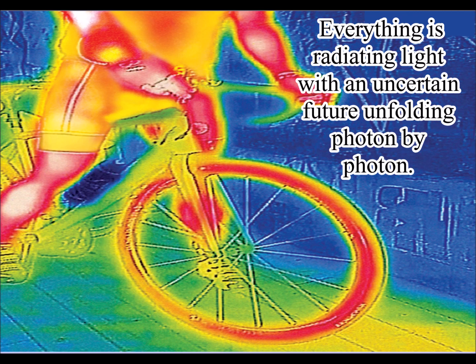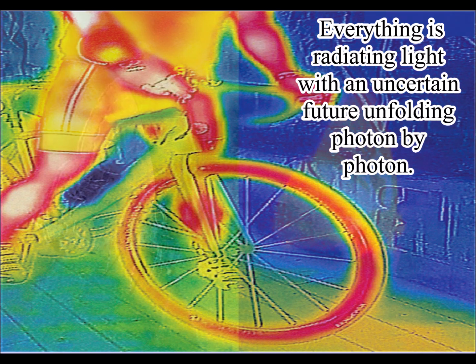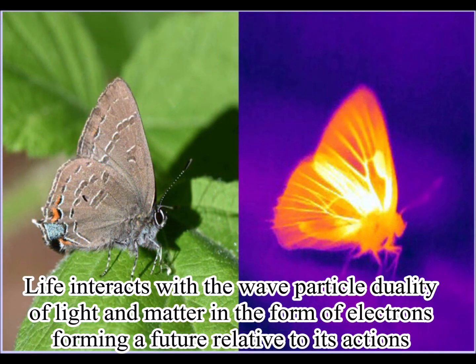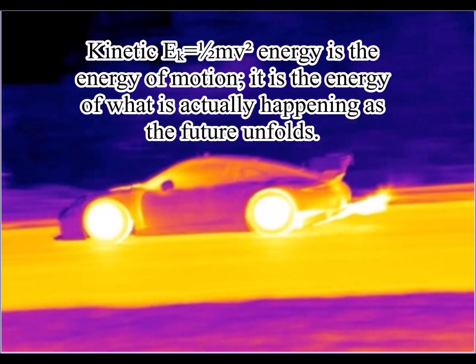Light is the maximum speed of causality because we have an uncertain probabilistic future continuously coming into existence with the exchange of light photon energy. Photon energy is continuously transforming potential energy into the kinetic energy of matter.